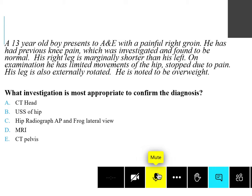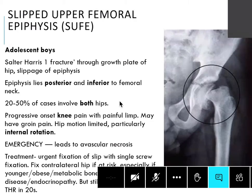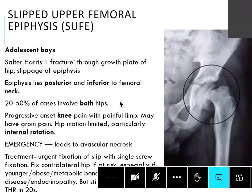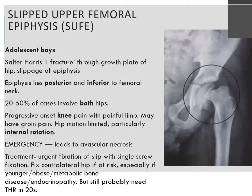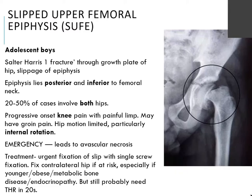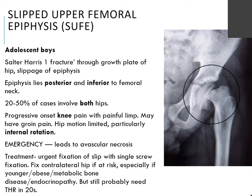A hip radiograph looking for a slipped upper femoral epiphysis — and crucially also in that frog lateral view. Sometimes they might just ask you about what the view is that you want. The key things to pick up on are that it's SUFE, it's an adolescent boy, and they'll often mention that he's obese and started trying to play sport again. They don't tend to go the bone disease metabolic route. Usually they keep to that key young adolescent boy who's a bit overweight, and also that limited internal rotation is quite a crucial sign.